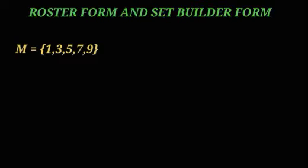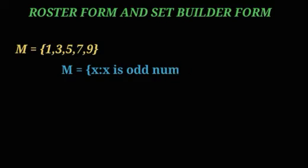This is roster form. In set builder form it is written as: A = {x | x is an odd number, x is less than 10}. This is set builder form.